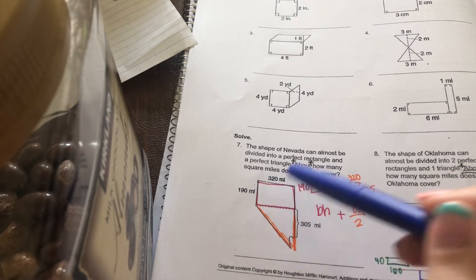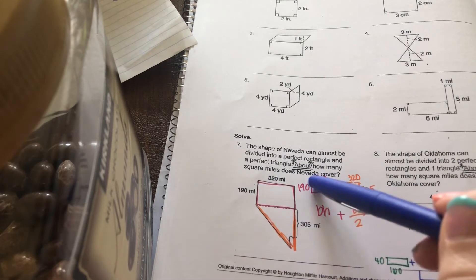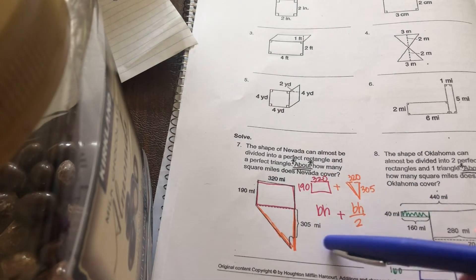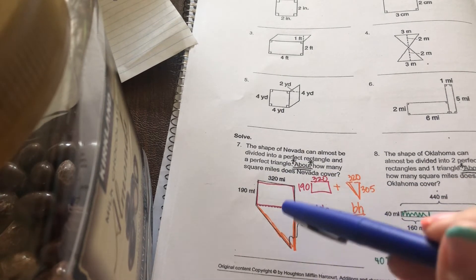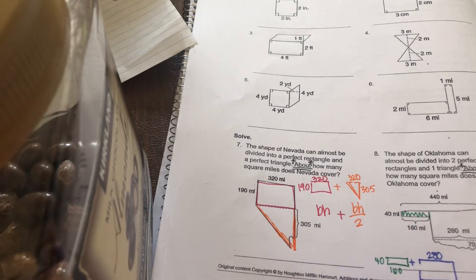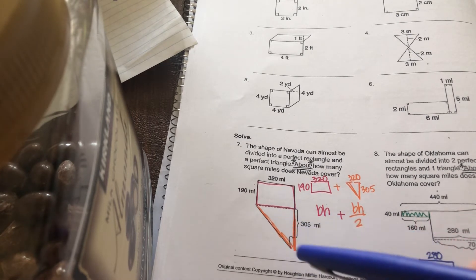And then your top rectangle, that's pretty easy, 320 by 190. And you're going to do base times height. Go ahead and plug in your numbers, add them together. That'll give you about how many square miles that Nevada covers.